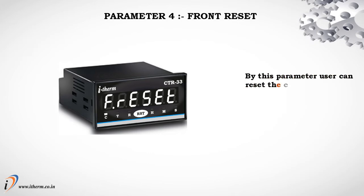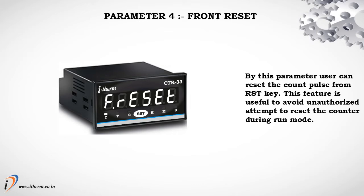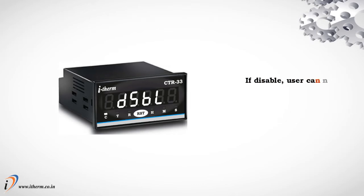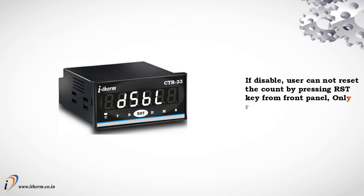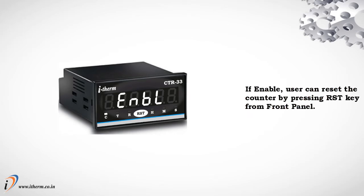Parameter 4: Front Reset. By this parameter, the user can reset the count pulse from the reset key. This feature is useful to avoid unauthorized attempts to reset the counter during run mode. If disabled, the user cannot reset the count by pressing the reset key from the front panel; only remote reset from the back terminal is allowed. If enabled, the user can reset the counter by pressing the reset key from the front panel.